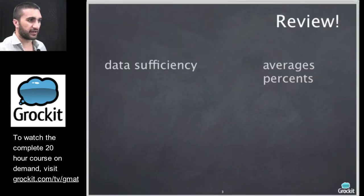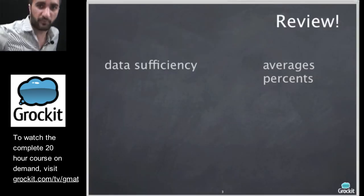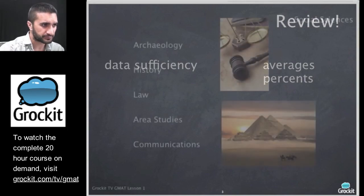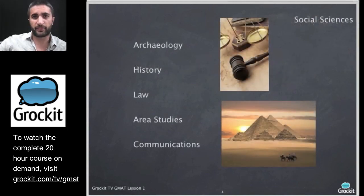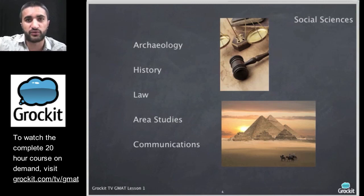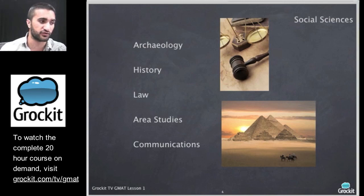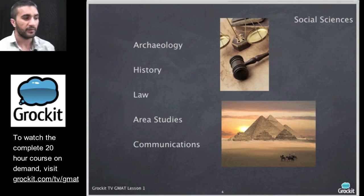So, let's go ahead and jump into some reading comprehension lesson. We're going to work some reading comprehension passages. And if we have a little time at the end, maybe we'll do another math question. So, there are really four general areas that the GMAT reading comprehension passages concentrate on in terms of the subject matter that they cover. One type are social science passages. And those include things like you see listed here, archaeology, history, law, area studies, communications.